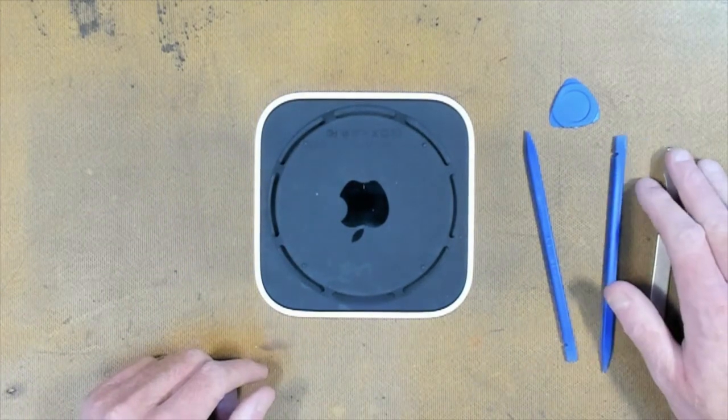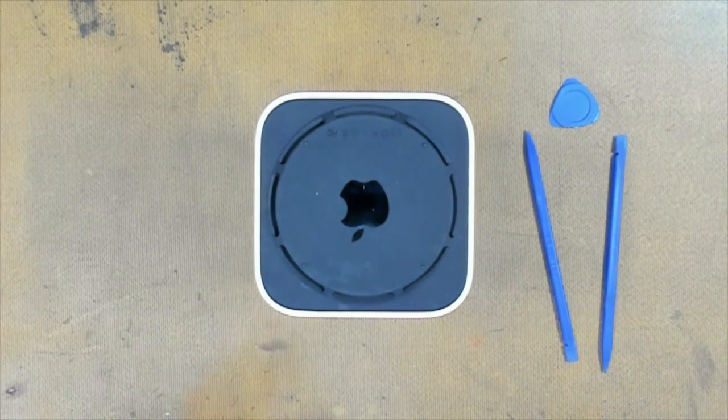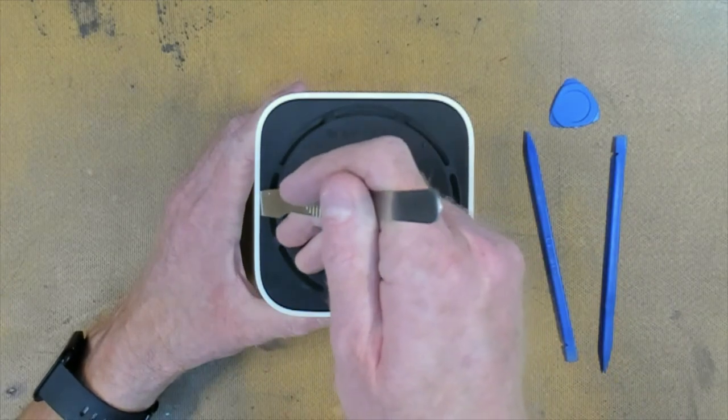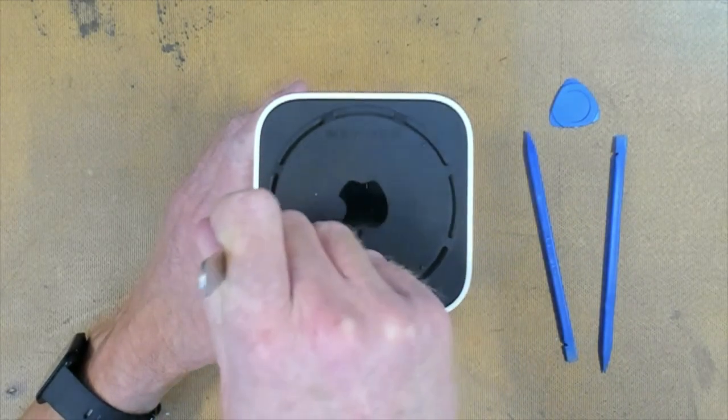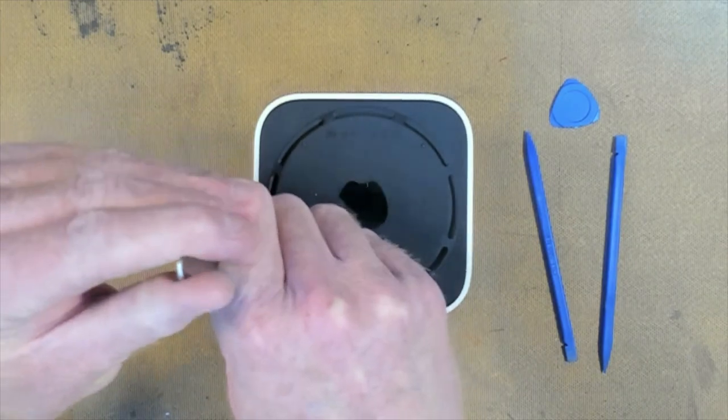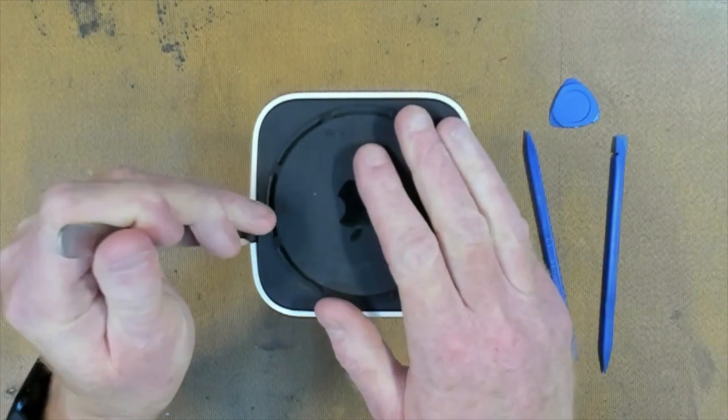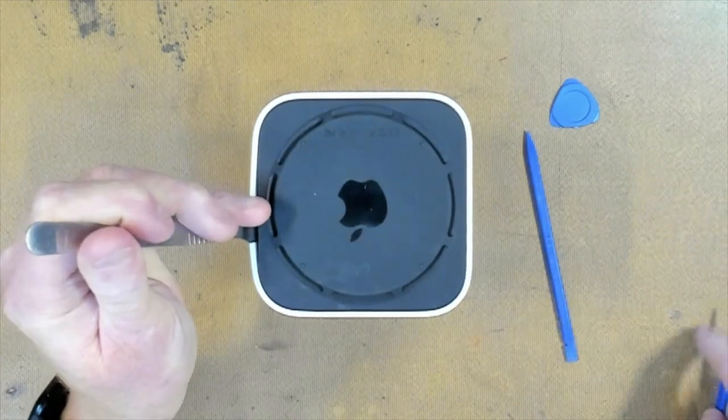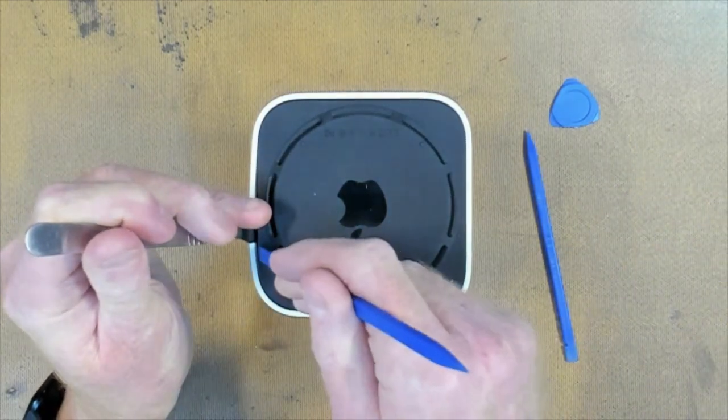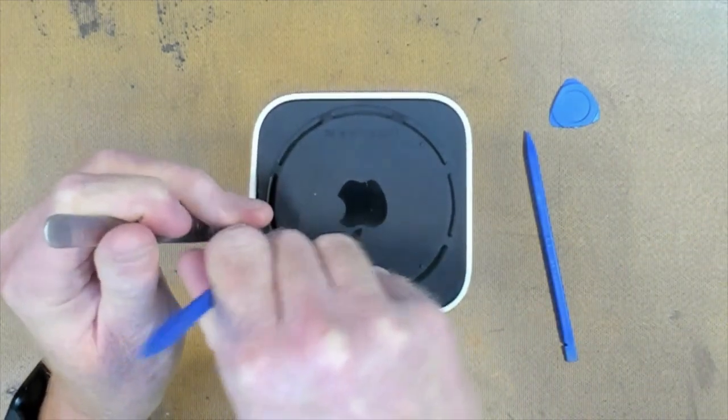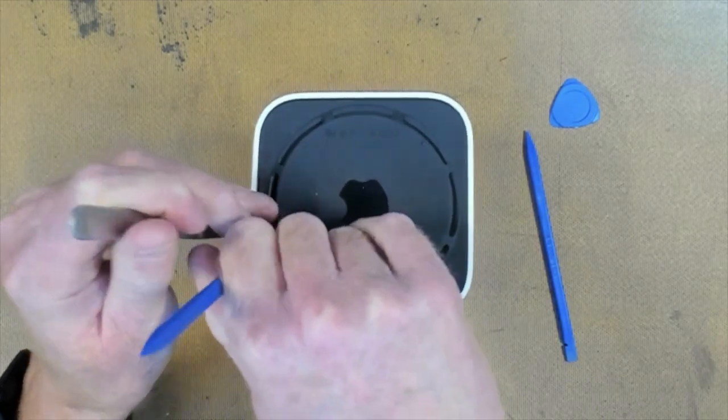All we need to do is work on this side. We go to the center and then we go slightly offset and we get our metal spudger in, shove it in there nice and hard and pry this edge back a little bit. And then we just throw in the plastic spudger just to keep it jammed open like that.